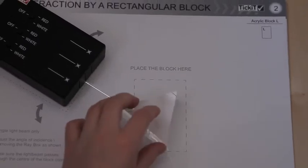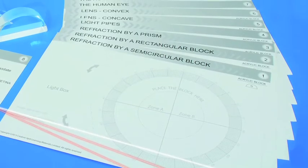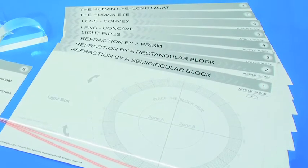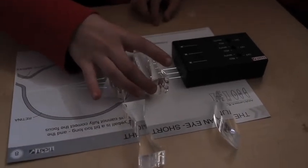What makes this set really comprehensive are the nine laminated experiment cards and other components including convex and concave lenses as well as rectangular and triangular prisms.